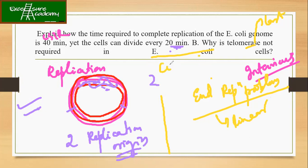No, because this is happening only in the case of linear chromosomes. And we know that in the case of E. coli it is circular chromosome. So E. coli does not have end replication problem. So there is no need of telomerase.